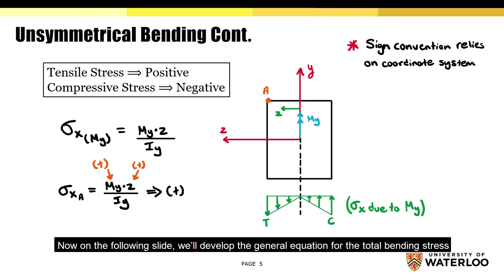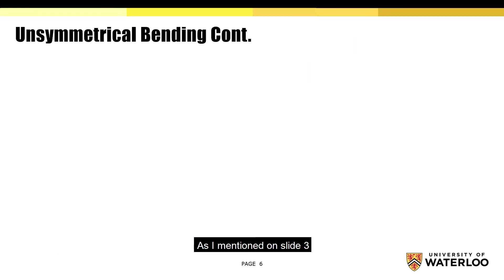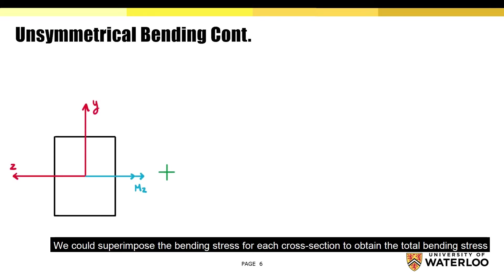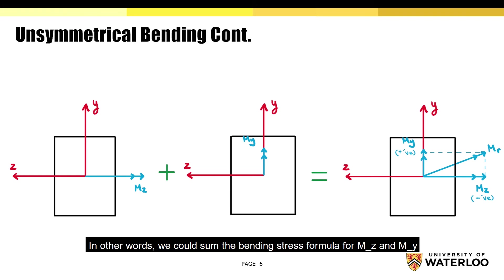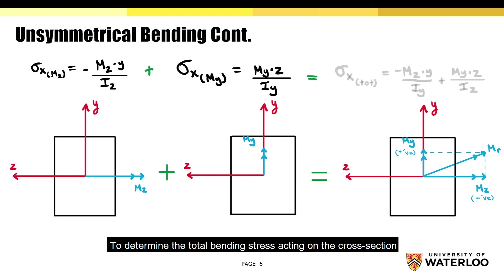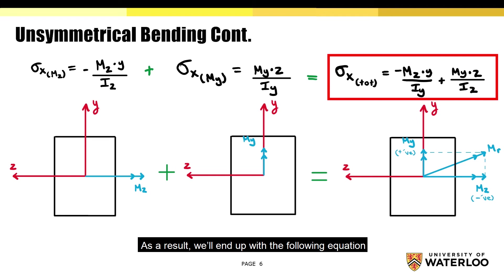On the following slide, we'll develop the general equation for the total bending stress. As I mentioned on slide 3, we could superimpose the bending stress for each cross section to obtain the total bending stress. In other words, we could sum the bending stress formula for Mz and My to determine the total bending stress acting on the cross section. As a result, we'll end up with the following equation.